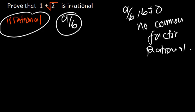To prove that 1 plus the square root of 2 is irrational, we use contradiction. We assume that it is rational. If it is rational, we equate it to a over b, where b is not equal to 0, and a and b are integers with no common factors.